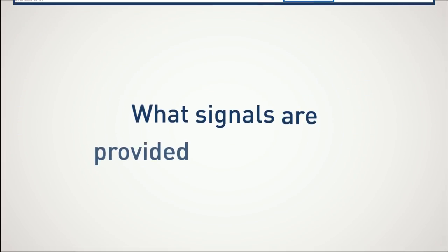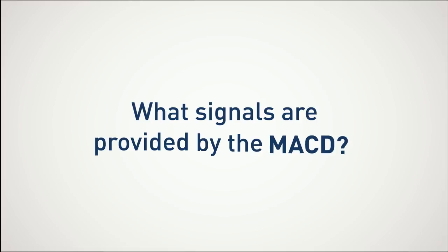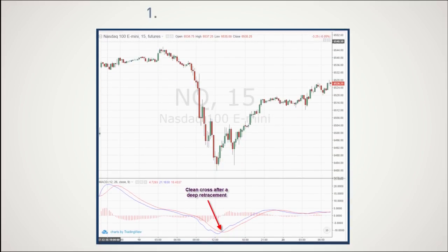What signals are provided by the MACD? One: Moving Average Cross. The most important signal of the Moving Average Convergence Divergence is when the faster MA breaks the slower one.